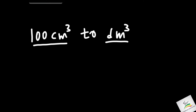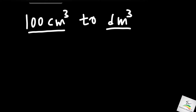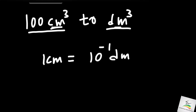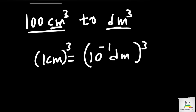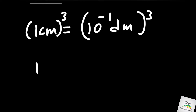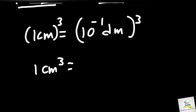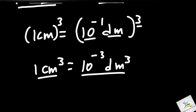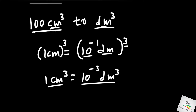So 160 centimeters equals 16 decimeters. Now we have 100 cm³ and 1 dm³. We are going to write down 1 cm³ and 1 dm³ in order to find their relationship.